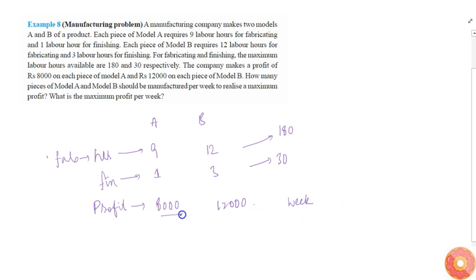Let's say we manufacture X units of Model A and Y units of Model B per week. We are given that the maximum labor hours available are 180 and 30, so 9X plus 12Y must be less than or equal to 180.